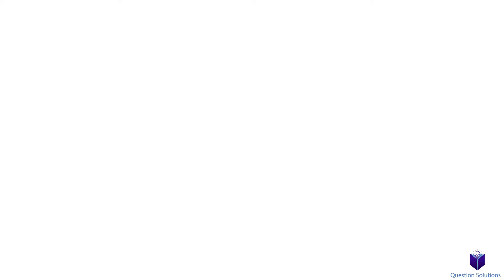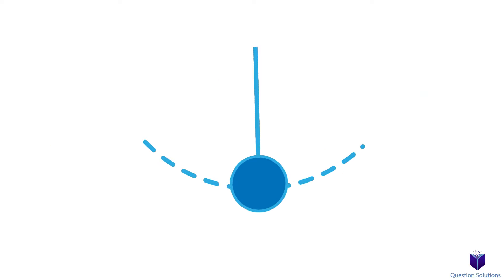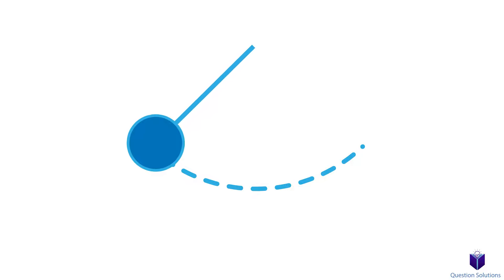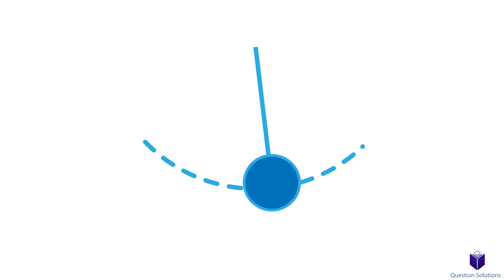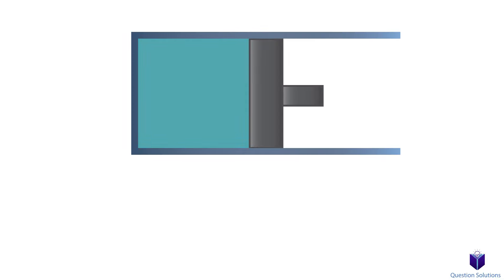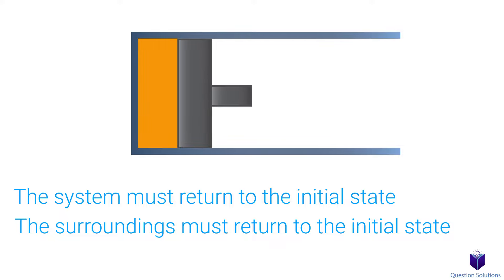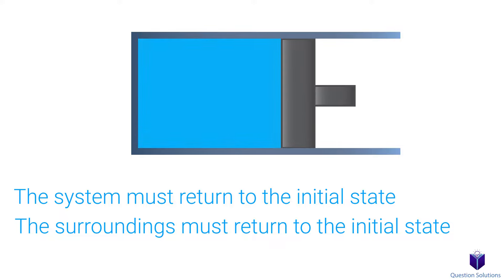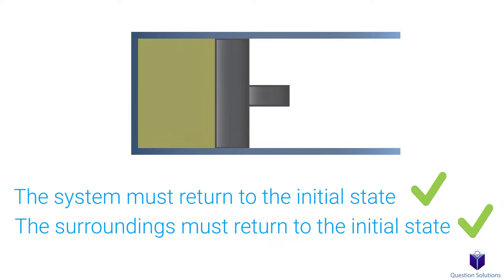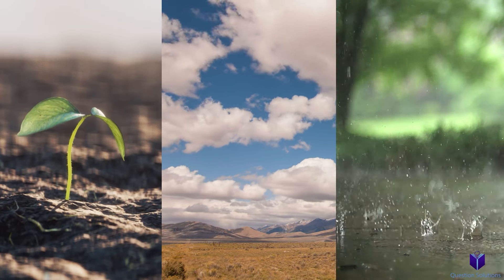To figure that out, we need to think about reversible and irreversible processes. If we have a process that can be reversed — in other words, back to the original state without leaving any trace on the surroundings — then that's a reversible process. In simple terms, the system and the surroundings must both come back to their initial states for a process to be reversible. Anything that doesn't check off both of those requirements is an irreversible process. Notably, every single process that happens in nature is irreversible.